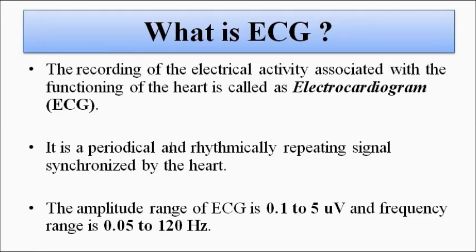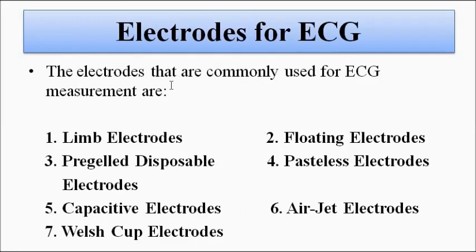I have already posted a video related to this, as well as videos about electromyogram and electroencephalogram — you can check those out. Now, the selection of a particular type of electrode is important for a particular biomedical measurement because of various factors: the electrode-skin interface characteristics, electrode-electrolyte junction, the type of electrolyte used, polarization, skin contact impedance, and motion artifacts. For all these reasons, electrode selection is very important. The electrodes commonly used for electrocardiogram are limb electrodes, floating electrodes, Welsh cup electrodes, pre-gelled disposable electrodes, pasteless electrodes, capacitive electrodes, and air jet electrodes.